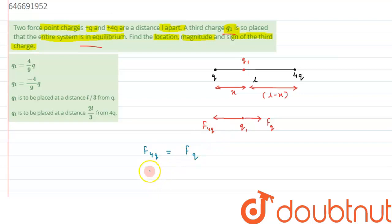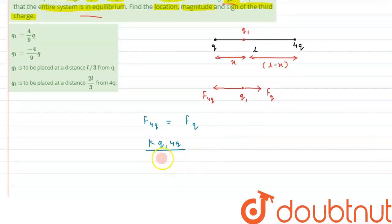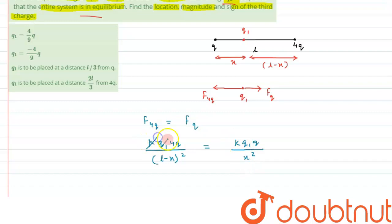By Coulomb's law, the force due to 4q can be written as k·q1·4q divided by (l − x)², and that equals k·q1·q divided by x². We can clearly see that k and q1 cancel from both sides, leaving us with 4 over (l − x)² equals 1 over x².